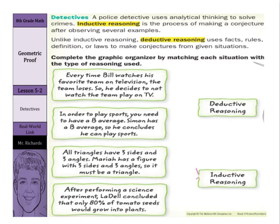Inductive reasoning is the process of making a conjecture after observing several examples. Unlike inductive reasoning, deductive reasoning uses facts, rules, definitions, or laws to make conjectures from given situations. So with inductive reasoning, you're observing examples and making a conjecture; with deductive reasoning, you're using facts, rules, definitions, and laws to come up with conjectures.